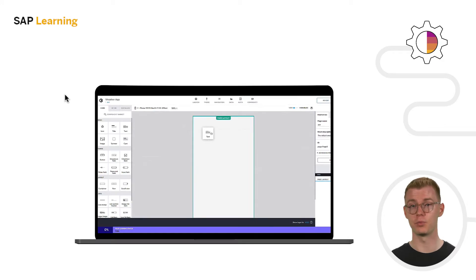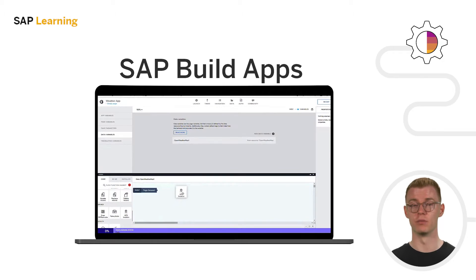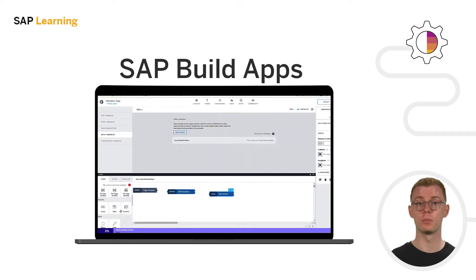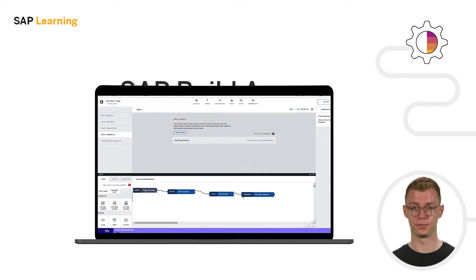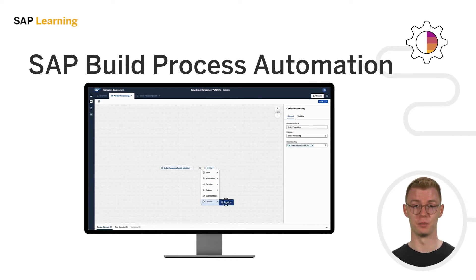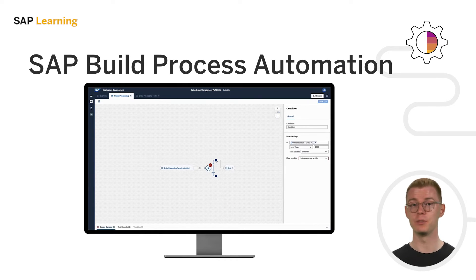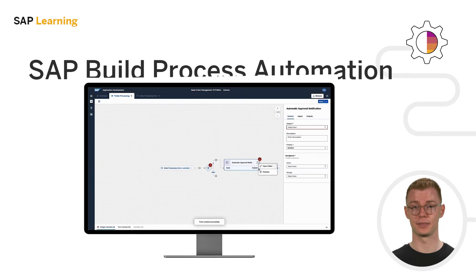These products are SAP Build Apps for building enterprise-grade applications with drag-and-drop simplicity, which is possible for both front-end and back-end applications. Next is SAP Build Process Automation, which enables business users to automate repetitive workflows and tasks.